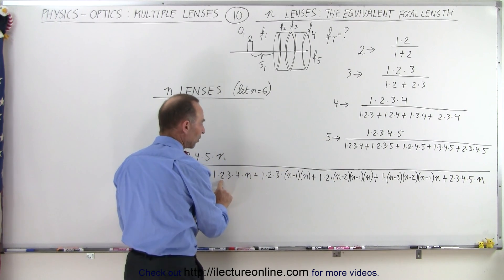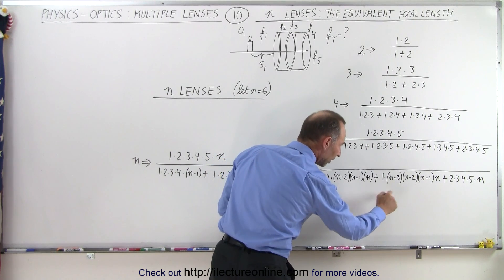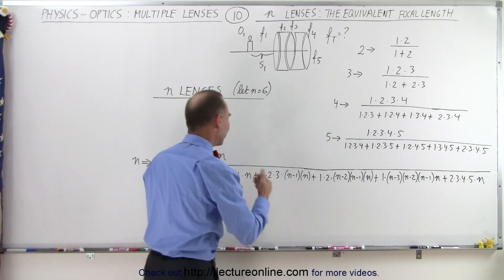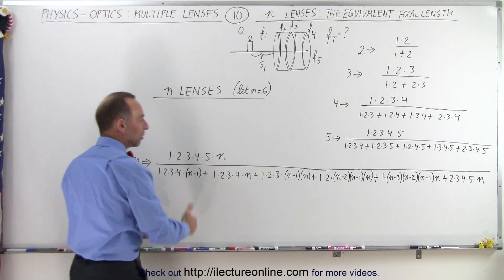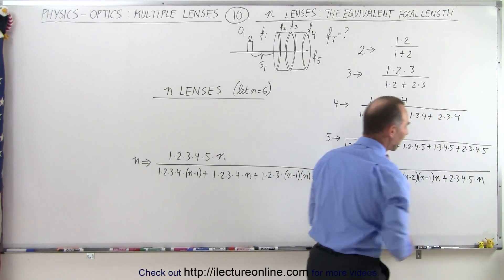The fourth to the last number, you increase it by one, making it n minus, where are we, n minus three right there. And then finally you take the final five numbers, multiply them together, two, three, four, five times n, n being the sixth number.